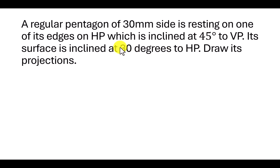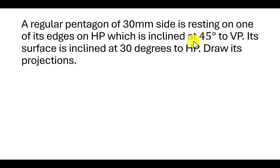Since the surface inclination is 30 degrees with the HP, we have to draw the pentagon on the horizontal plane, that is the XY plane. First let us draw the pentagon on the XY plane, then we will incline the edge at 45 degrees, and then rotate the surface at 30 degrees. Let us jump into Autodesk Fusion 360.